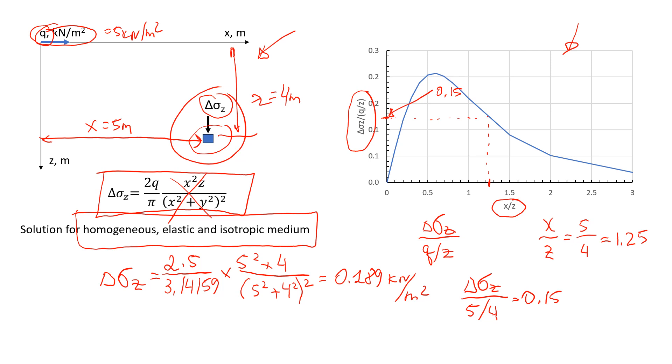Right? So in this case, change in the vertical stress is 0.15 times 5 over 4, which is 1.25. So that will give us approximately 0.188, which is very similar to this answer.